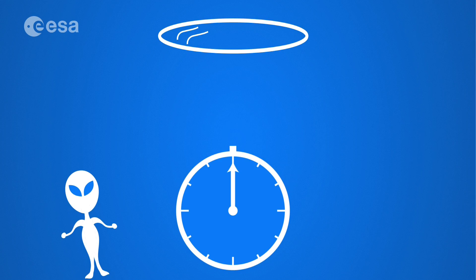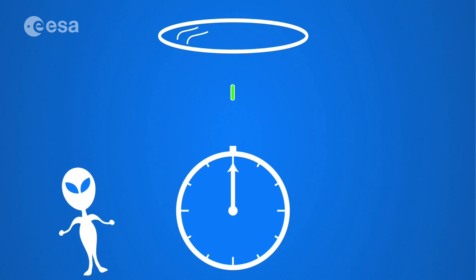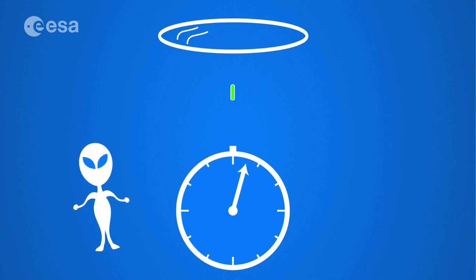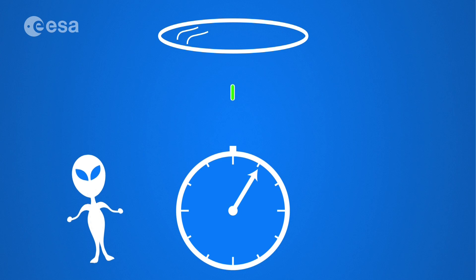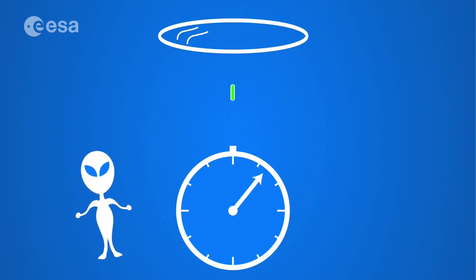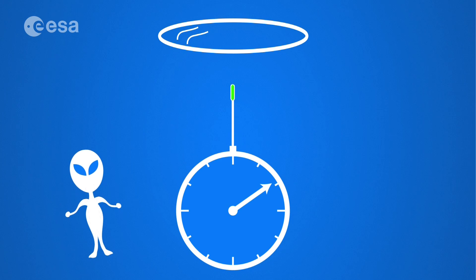Imagine we have a clock that works by firing a laser pulse across a set distance to a mirror. In this clock, each time the beam returns to the source, we have one tick. The clock operator sees the beam moving back and forth in a straight line in his frame of reference.